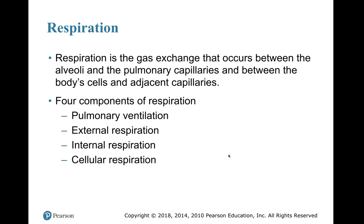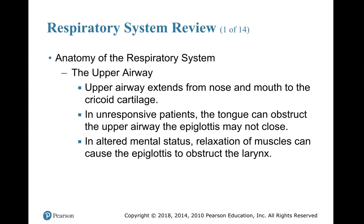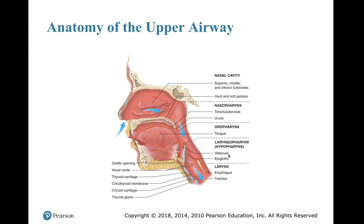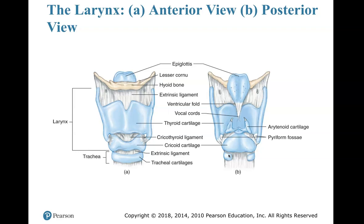A review of the anatomy of the respiratory system — the upper airway. The upper airway extends from the nose and mouth to the cricoid cartilage. In unresponsive patients, the tongue can obstruct the upper airway and the epiglottis may not close. In altered mental status, relaxation of muscles can cause the epiglottis to obstruct the larynx. Here's a review of the upper airway and the larynx — figure A on the left is the interior view and B is the posterior view. You need to look these over in your textbook and PowerPoint slides when you study for the test.